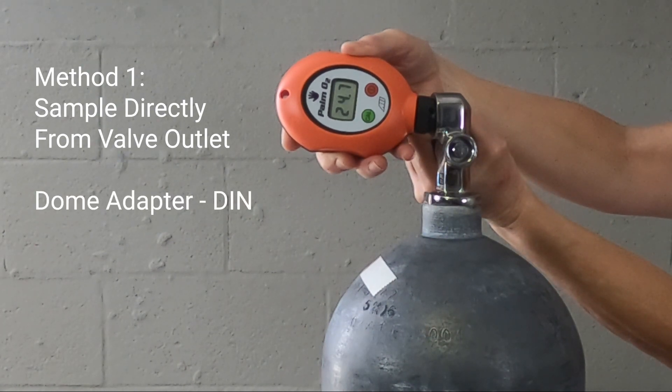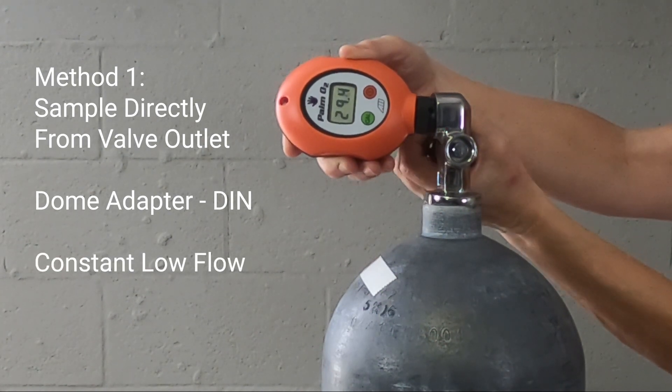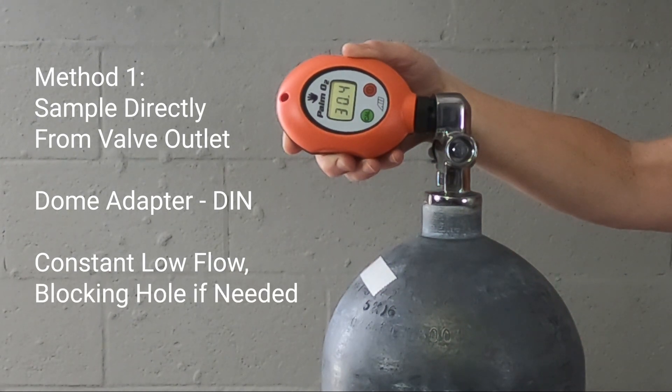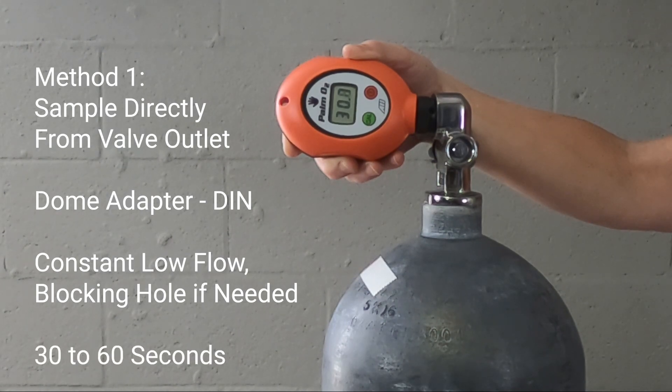Here we use the included dome adapter that works best with DIN outlets. Open the valve just enough to get a constant low flow of air. If the DIN valve design includes a tiny hole on the side, hold your finger over the hole. Allow the reading to stabilize for 30 to 60 seconds.